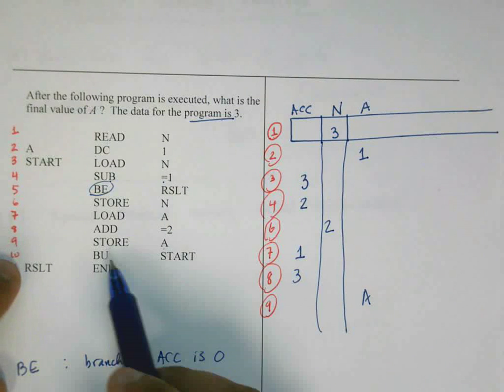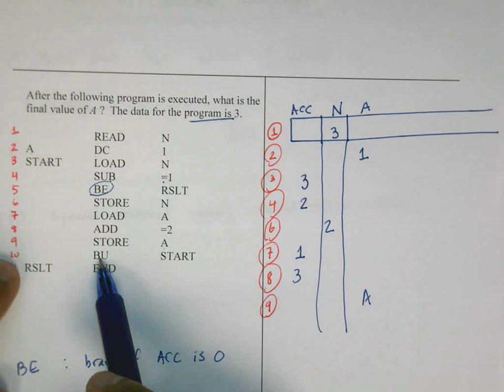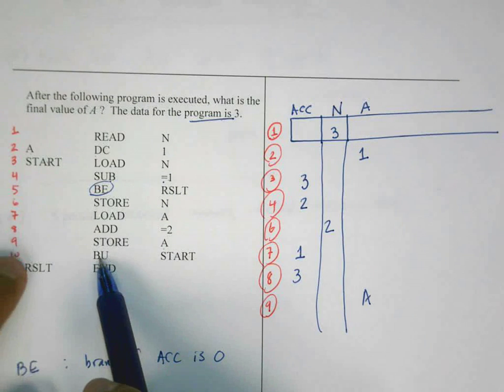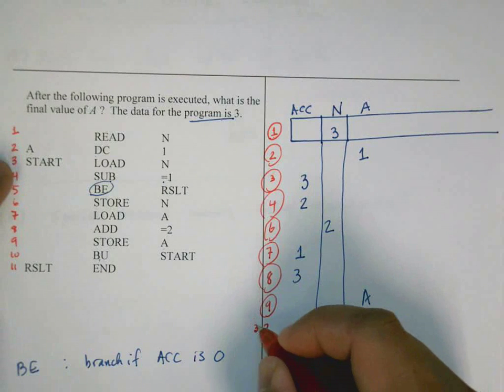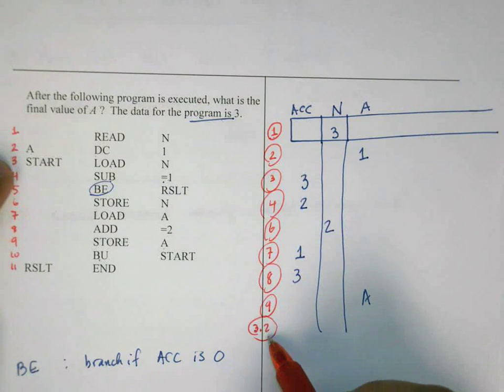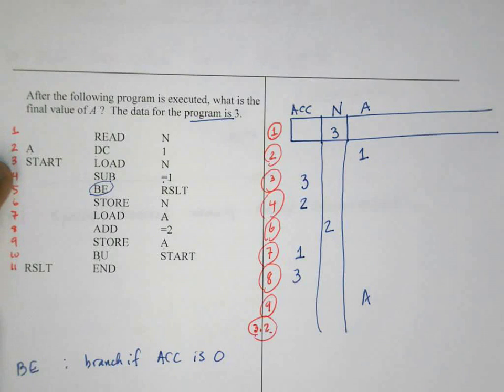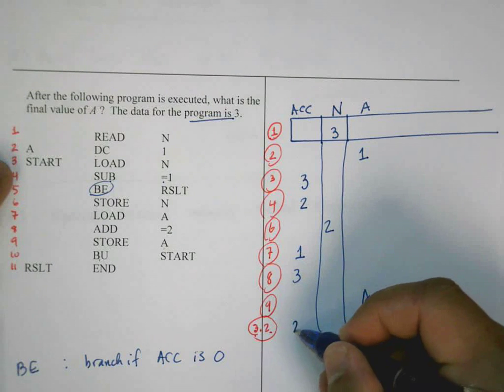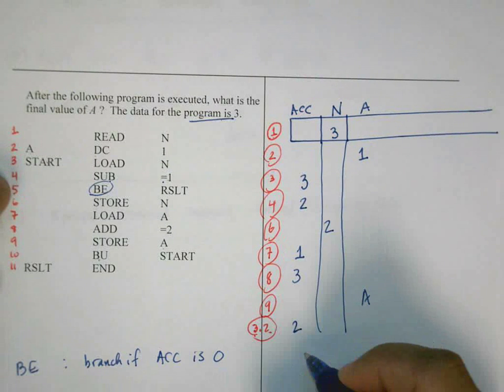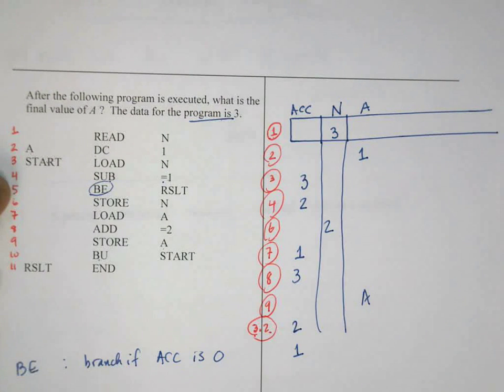Whatever is in the accumulator now goes into A. So A is here. I'm going to extend these lines here so I don't get them too mixed up. And then finally, branch unconditionally. This is BU. Branch unconditionally to START. So when you're here, without checking for anything, just jump back to the label that says START. And now we go through this again. So load N. So whatever is currently in N, place it into the accumulator. And I'm going to name this line here 3.2. This is because this is the second time executing line 3.